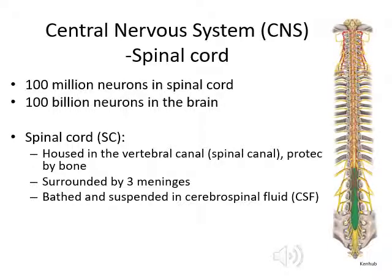We finished the peripheral nervous system and now we're going to go into the central nervous system, which is the cerebral cortex, the cerebrum, the brainstem, the cerebellum, and the spinal cord.